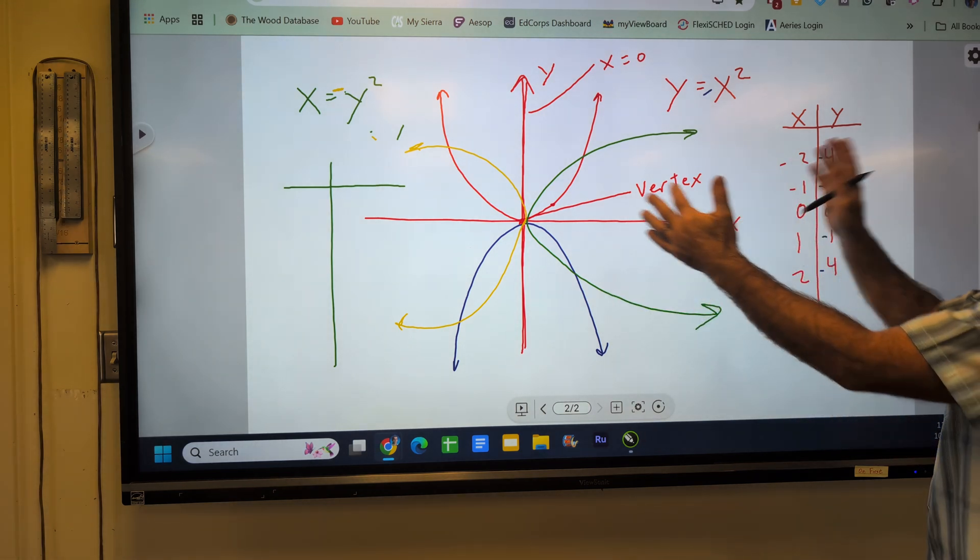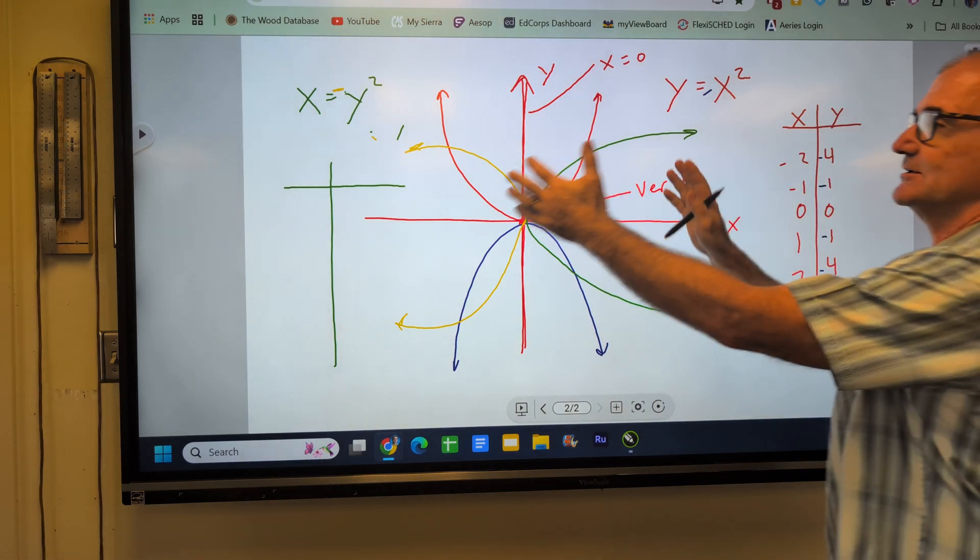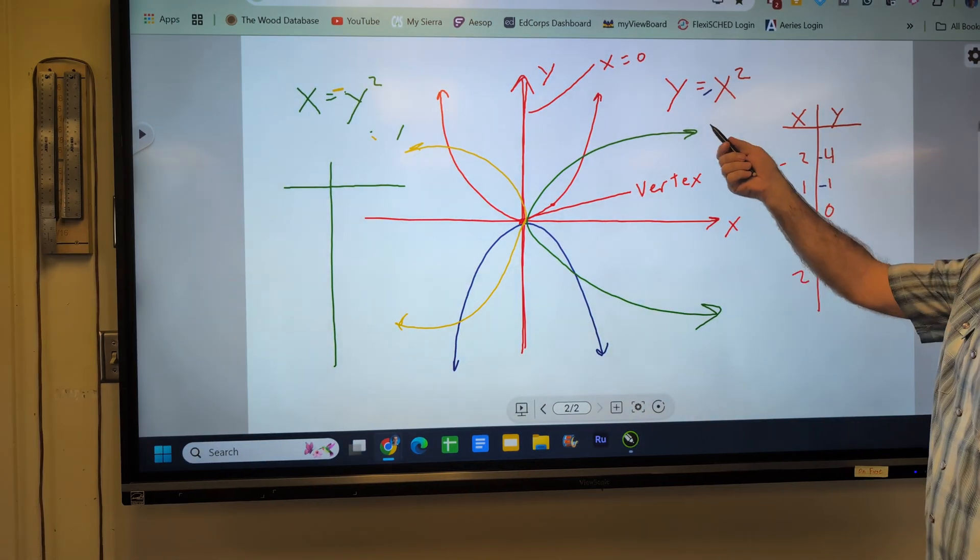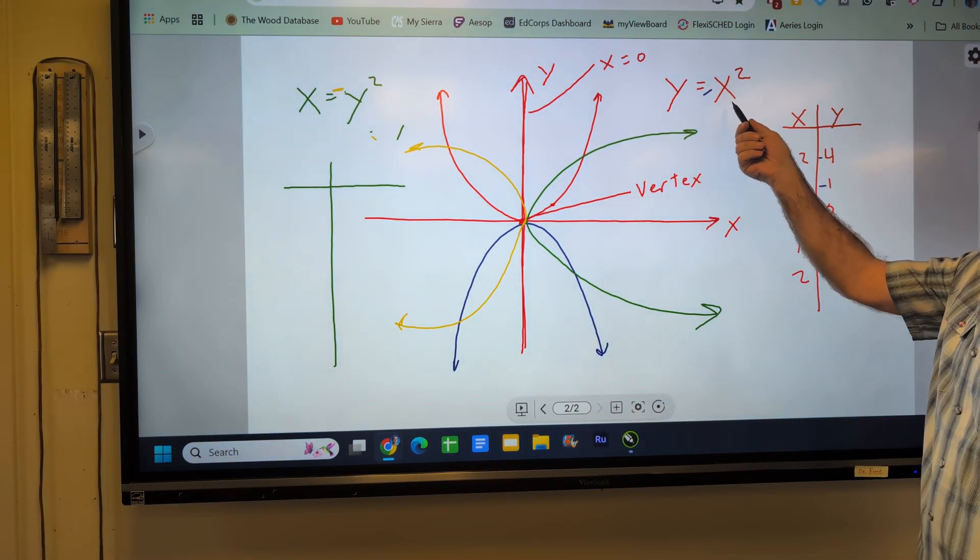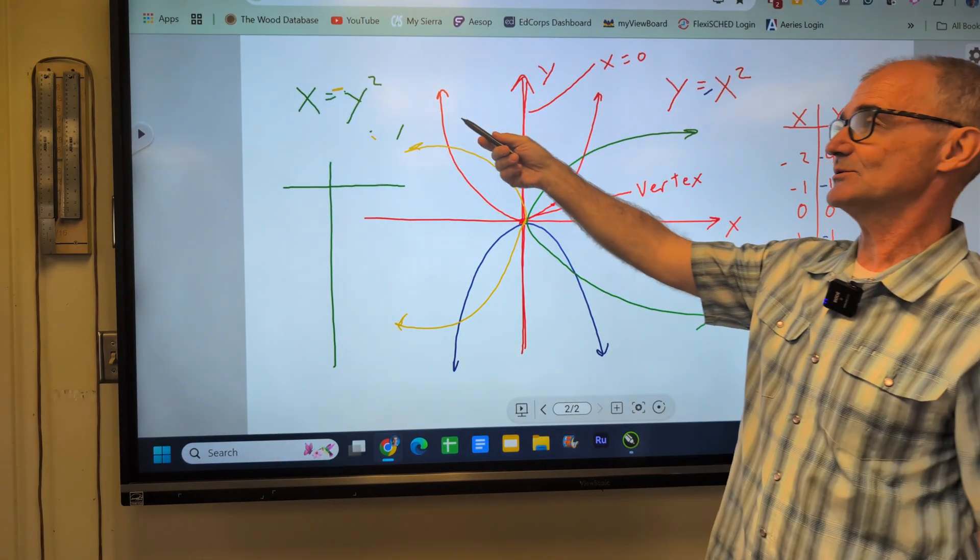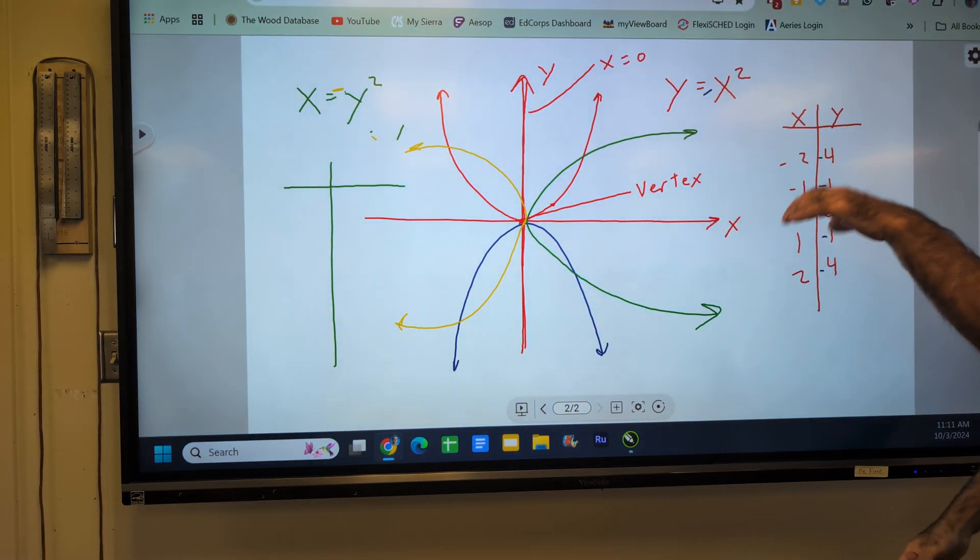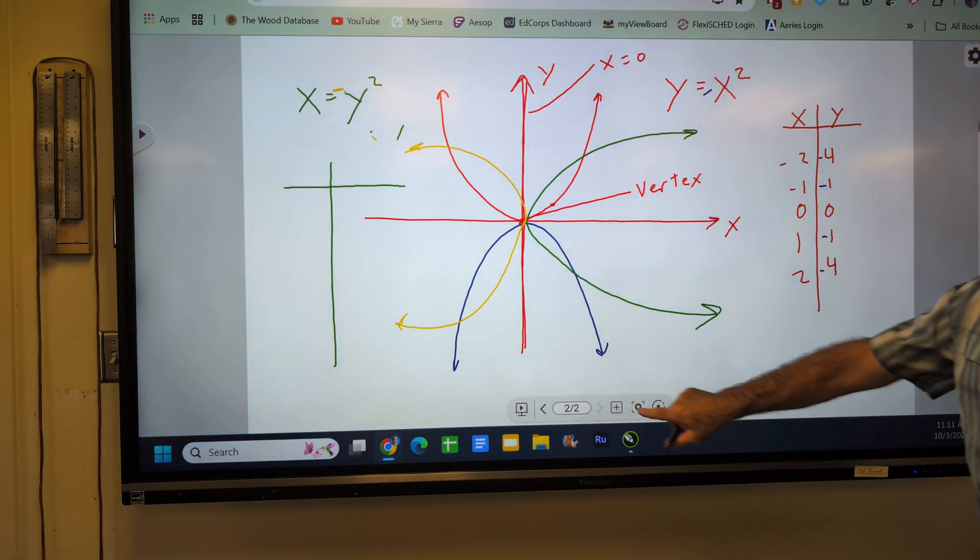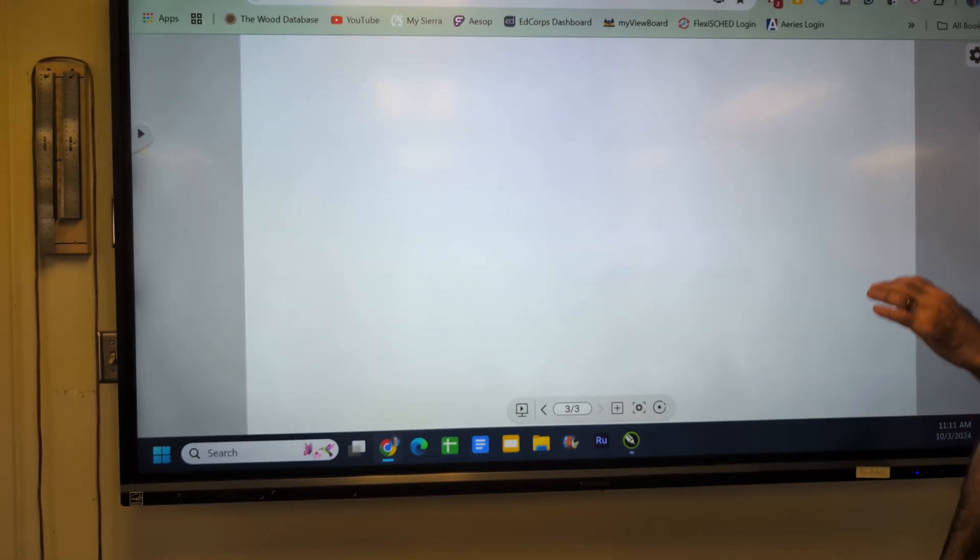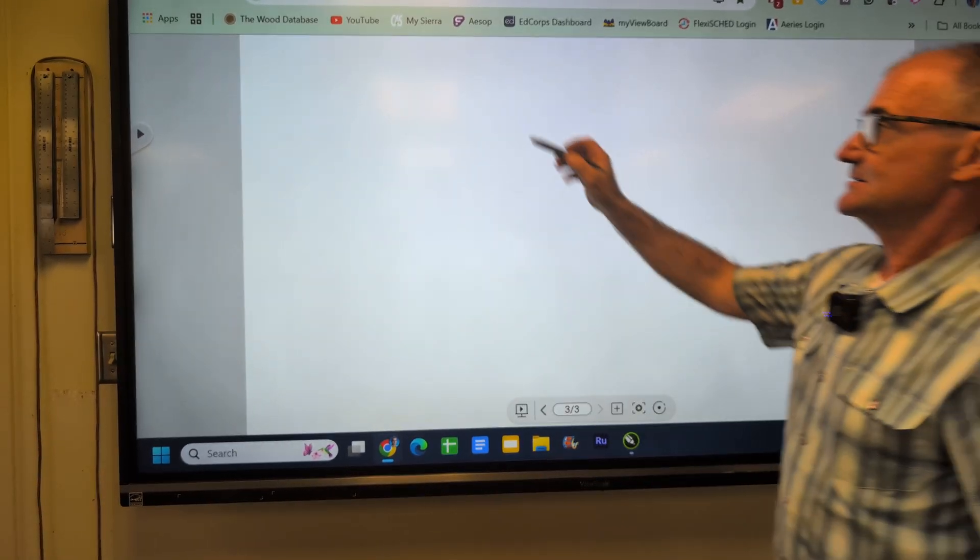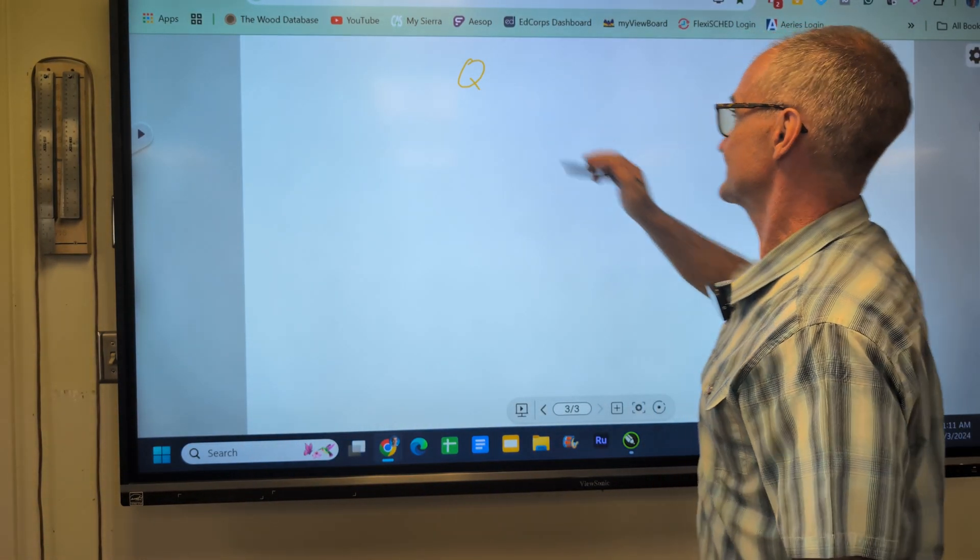So that's how we're going to start looking at these parabolas. And we're going to open them up, which is called dilation, and then we're going to move them around. But you want to look at the parent graph first. Is it y equals x squared? Is it x equals y squared? Is it opening up or down based on the negatives? These are also quadratics.